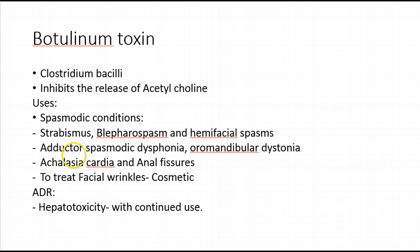Other spasmodic conditions treated include adductor spasmodic dysphonia and oromandibular dystonia. Botulinum toxin also treats GI disorders like achalasia cardia, where there is spasm of the lower esophageal sphincter. It relaxes these sphincters as well as the anal sphincter, giving it use in treating anal fissures.